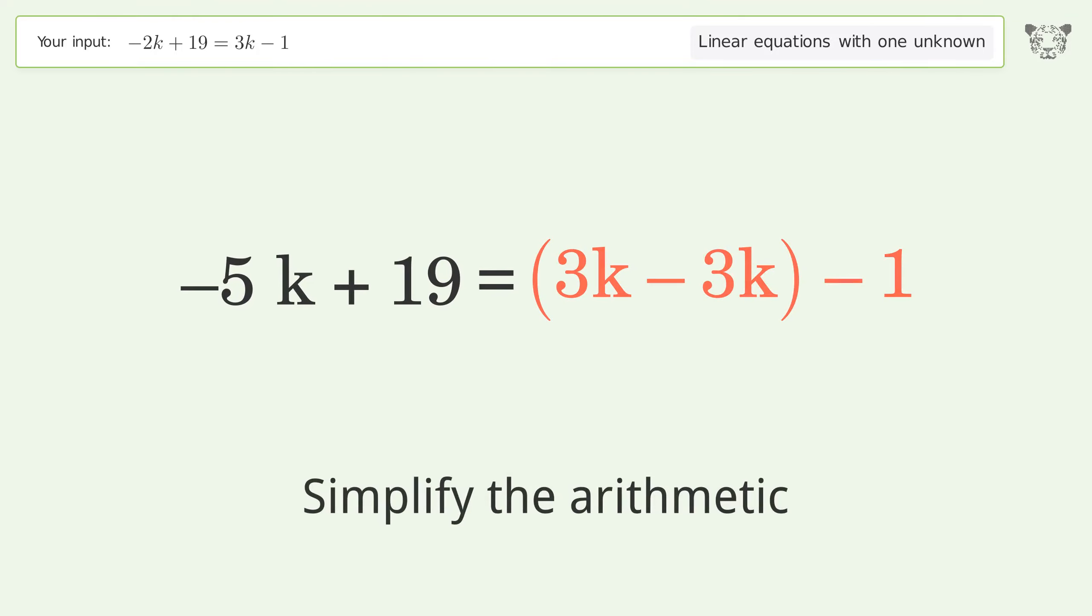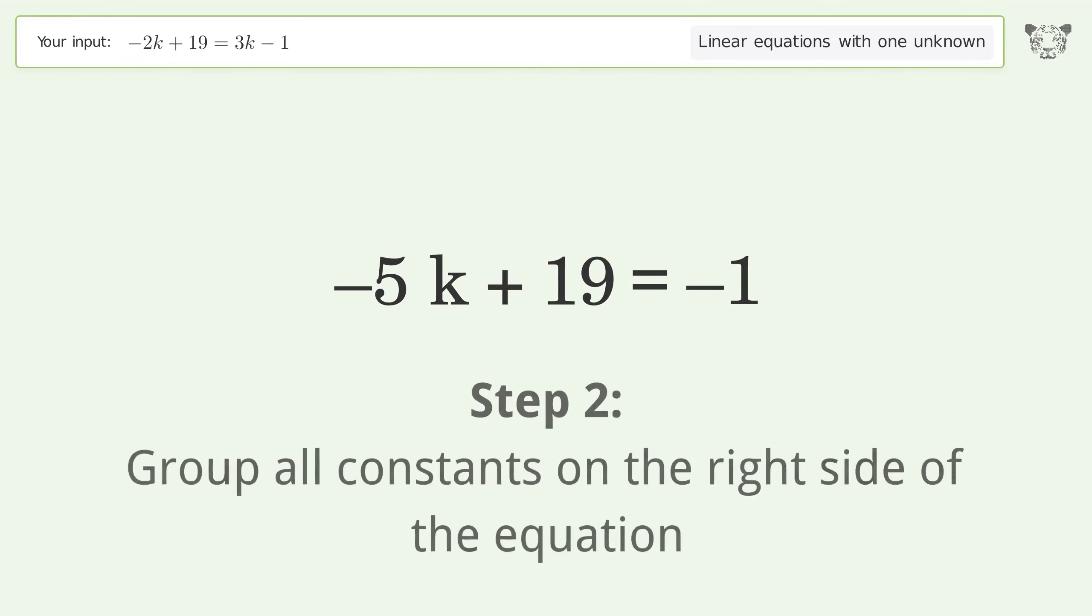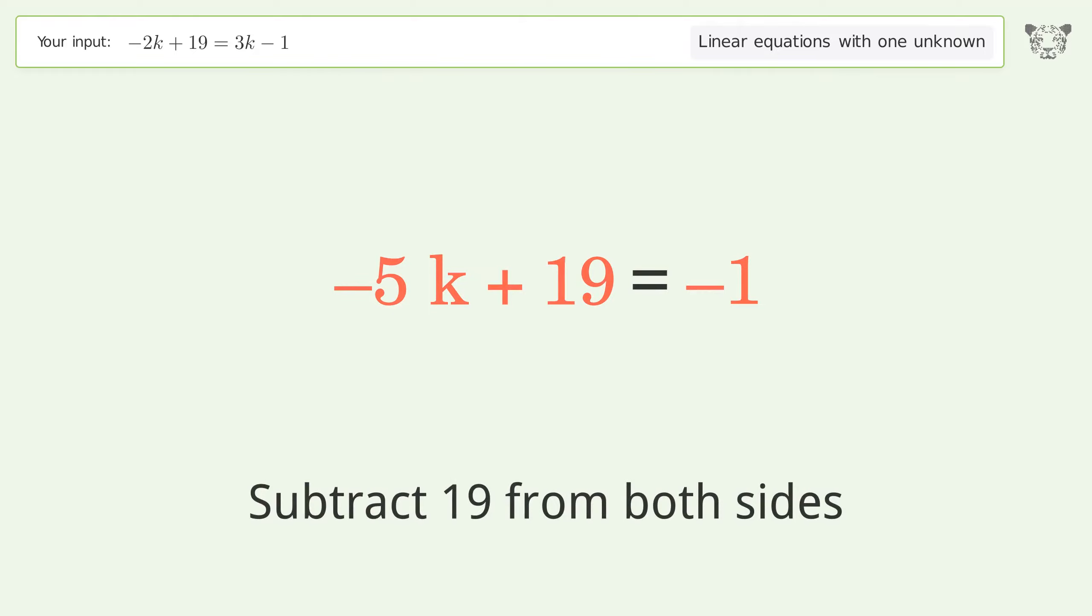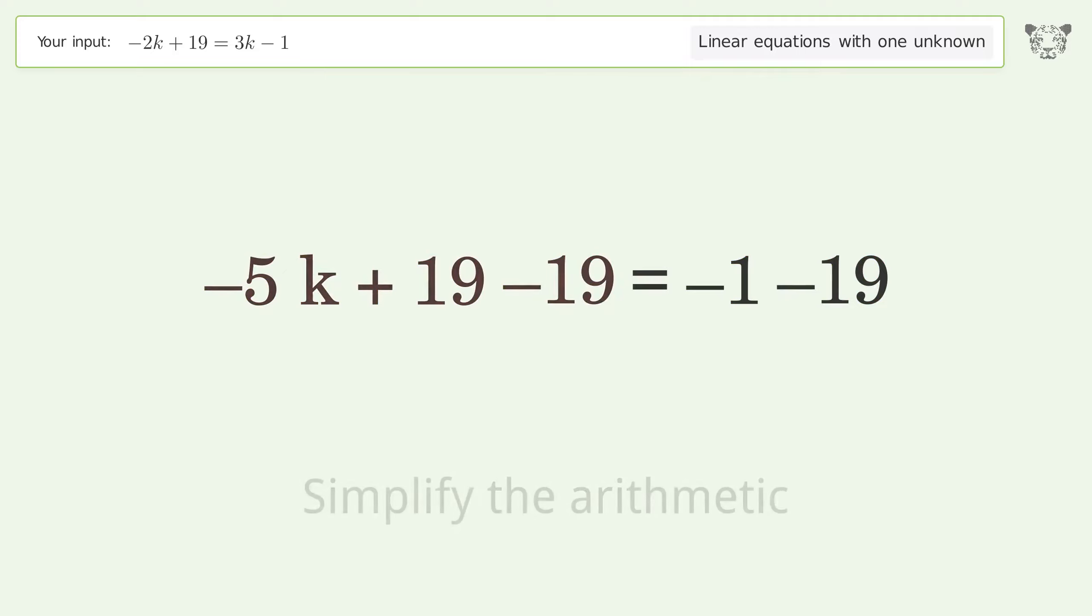Group all constants on the right side of the equation. Subtract 19 from both sides. Simplify the arithmetic.